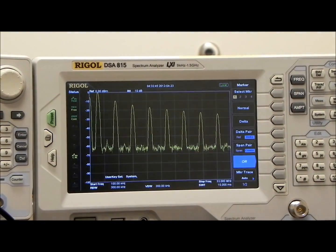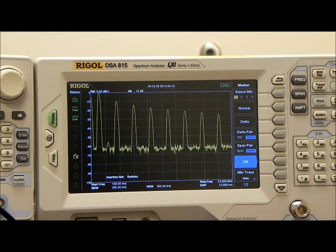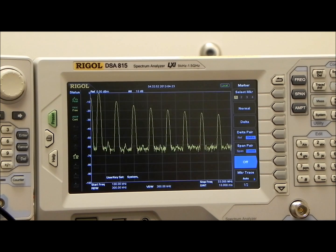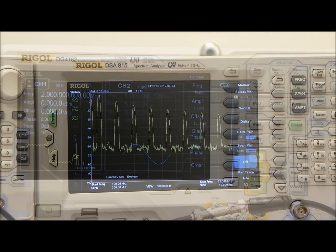Over on the right, I have also put in one of Rigol's spectrum analyzers. This one happens to be the DSA815. And you'll see that it is showing the 1-3-5-7 type of pattern that is common in a square wave.